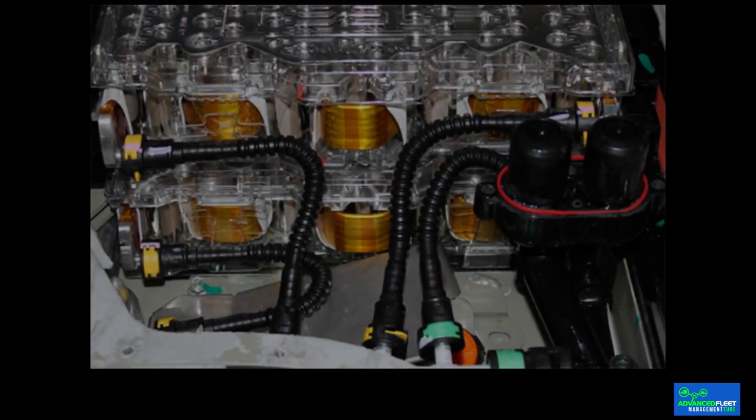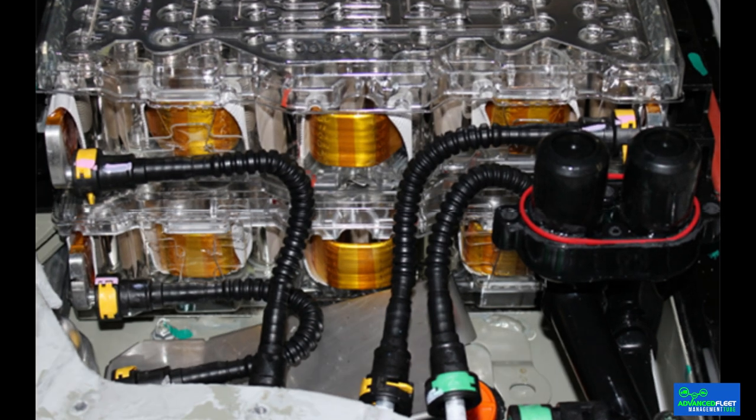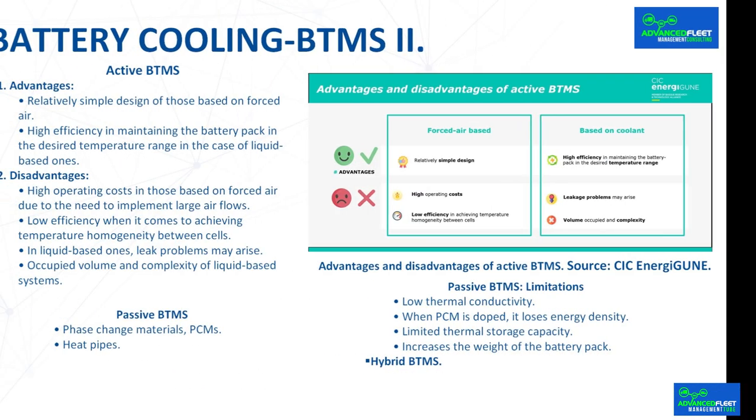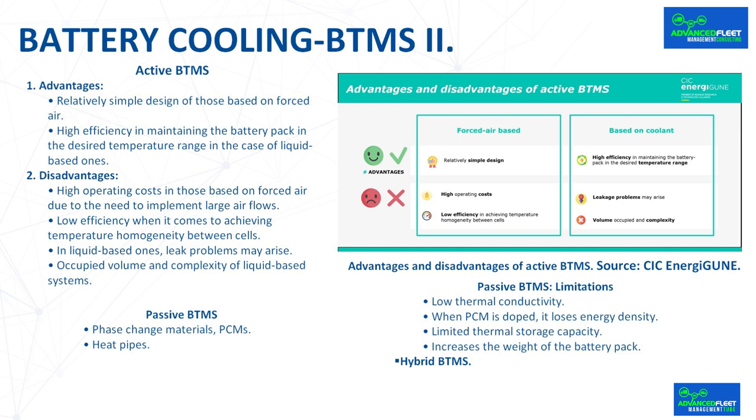In general, the disadvantages of active BTMS include: high operating costs in air-based systems due to the need for large air flows; low efficiency in achieving temperature homogeneity between cells; and in liquid-based systems, potential leak problems, occupied volume, and complexity.